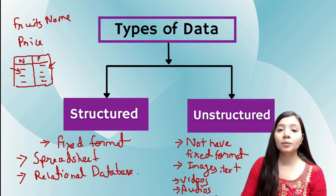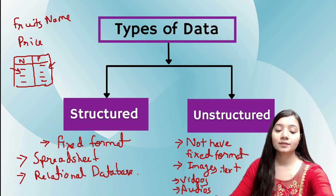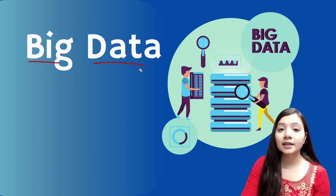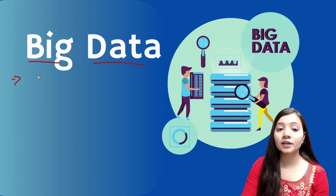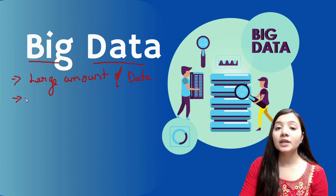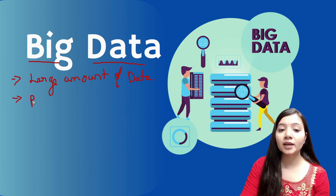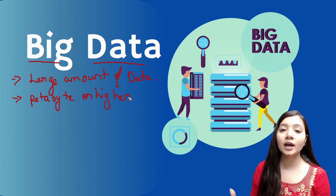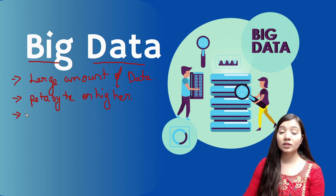There is also a type of data called big data. Big data — as the name suggests — is data that is big in nature, meaning a large amount of data. Specifically, data that is in the range of petabytes or higher is called big data. Analysis on big data is somewhat different from analysis on normal data.